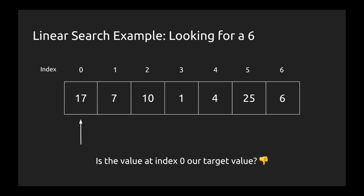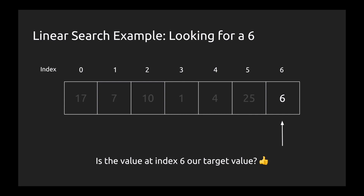In this example, we have an array of seven elements from indices 0 to 6. We're going to be looking for the value 6 inside of the array. The way linear search works is we start at index 0. We say, is that value our target value? That's a 17, we're looking for a 6, so it's not. And we continue on to the next index and ask, is that our target value? It's not. So we continue. We continue this process on and on until either we find the target value or we've gotten to the end of the array. But in this case, we did find it — at index 6, we found our target value of 6.